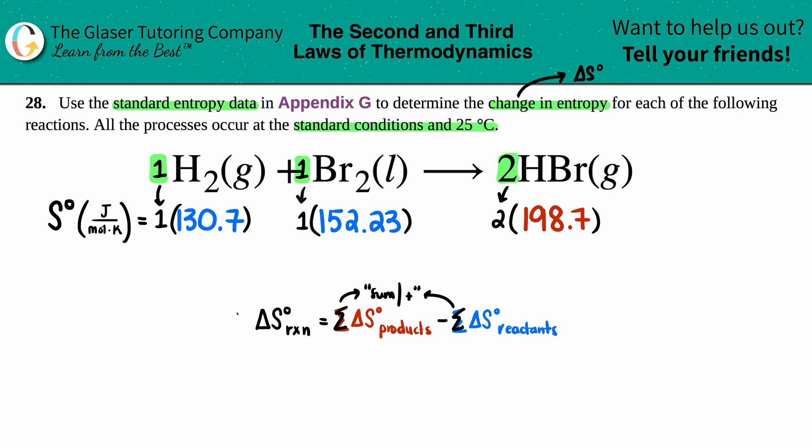Do the same thing here—anything times one is itself. Now we have to add them all up, take the sum. It's literally H₂ gas plus Br₂ liquid, so it'd be this plus this. For the products, I don't have to add anything because there's only just HBr on the product side. But let's see what the sums are. For the reactants, 130.7 plus 152.23, I get 282.93.